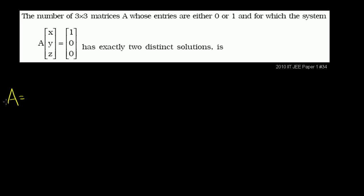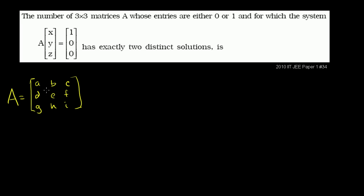So let's think about this a little bit. Just so we make sure we understand what this is saying, let me define my matrix A — it's a 3 by 3 matrix — as entries a, b, c, d, e, f, g, h, i. Just all lowercase letters. These are the actual entries in the matrix.